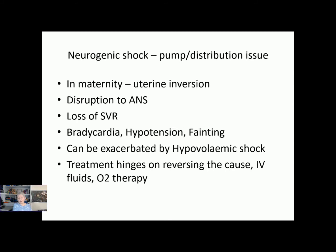Neurogenic shock is anything that will disrupt the autonomic or general nervous system — spinal damage could cause it, but in maternity we look at it from a uterine inversion perspective. What you get with neurogenic shock is a systemic loss of vascular resistance, meaning the normal tone in the blood vessels is gone throughout the whole body. You get pooling of blood and hypotension. Disruption to the nervous system causes a bradycardia rather than a tachycardia — this is the only type of shock with bradycardia — and women often faint. Uterine inversion is often associated with a lot of pain and can be exacerbated by postpartum haemorrhage, so hypovolemic shock as well.